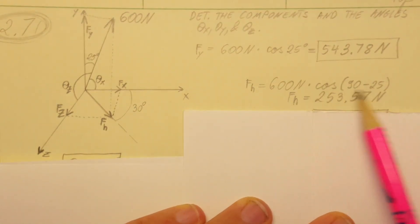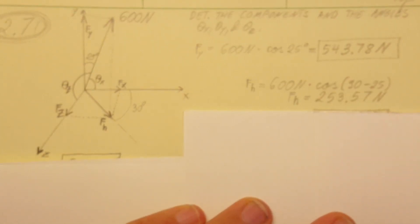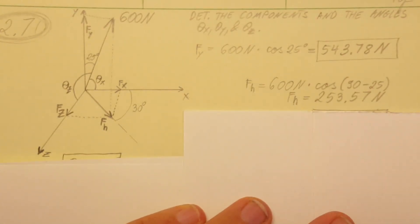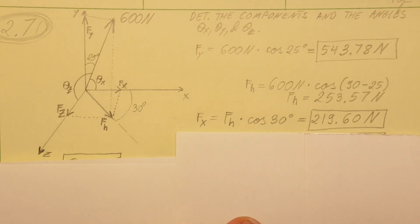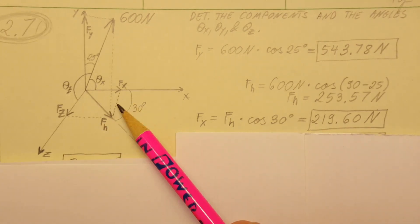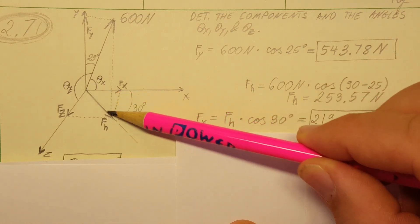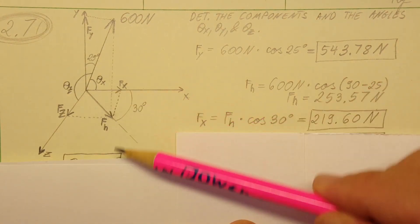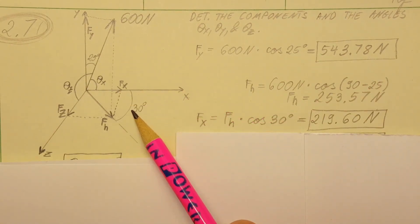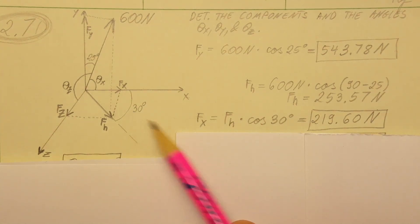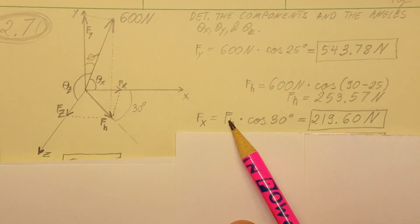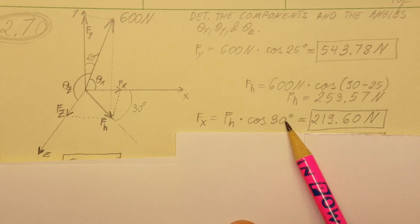This will give us a value of 253 newtons. Now we can go ahead and use this so we can find our other components. For fx we're going to use this triangle right here. Our angle is 30, so we can go ahead right away and solve: fh times cosine 30. For the calculator we get 219 newtons.